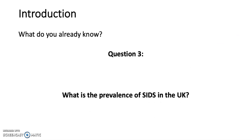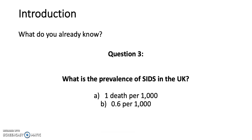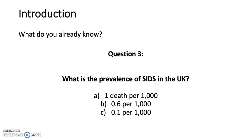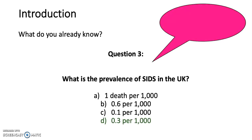Question 3: What is the prevalence of SIDS in the United Kingdom? A. One death per thousand. B. 0.6 per thousand. C. 0.1 per thousand. Or D. 0.3 per thousand. The answer is D, 0.3 per thousand.